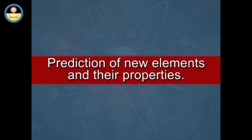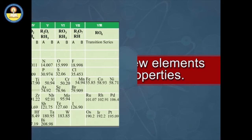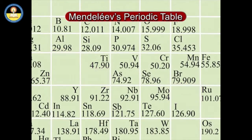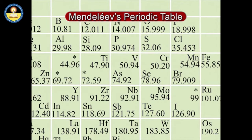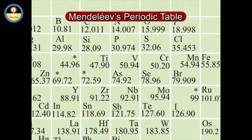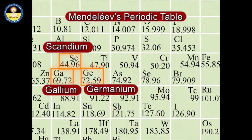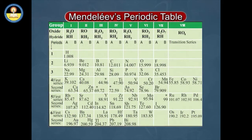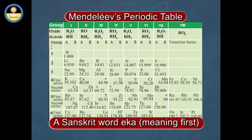Mendeleev left some blank spaces or gaps in the periodic table for those elements which were not known at that time. He also made the bold prediction that these elements would be discovered in due course of time and would fill the blank spaces. He even predicted the properties of these elements in light of the properties of other elements present in the same group. For example, scandium, gallium, and germanium were not known at the time Mendeleev proposed his periodic table. Mendeleev named these elements by prefixing the Sanskrit word 'eka' meaning 'first' to the name of the preceding element in the same group — that is, eka-boron, meaning the first element after boron, for scandium.